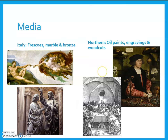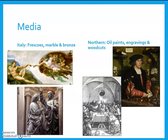In the North, frescoes don't really hold up well in the colder, wetter climate of Northern Europe. So once oil paints were more innovated and brought to the North, most artists there used oil paints. You can usually tell oil paints because they're darker, have more detail, and have a translucent quality. They take a long time to dry, so artists can get more layers and colors into their paint, as opposed to the bright colors of tempera and fresco. In the North, they also tend to do more engravings and woodcuts, a style common to Germany and the Netherlands, where they carve art into blocks of wood or metal and use it as a stamp to make lots of images.